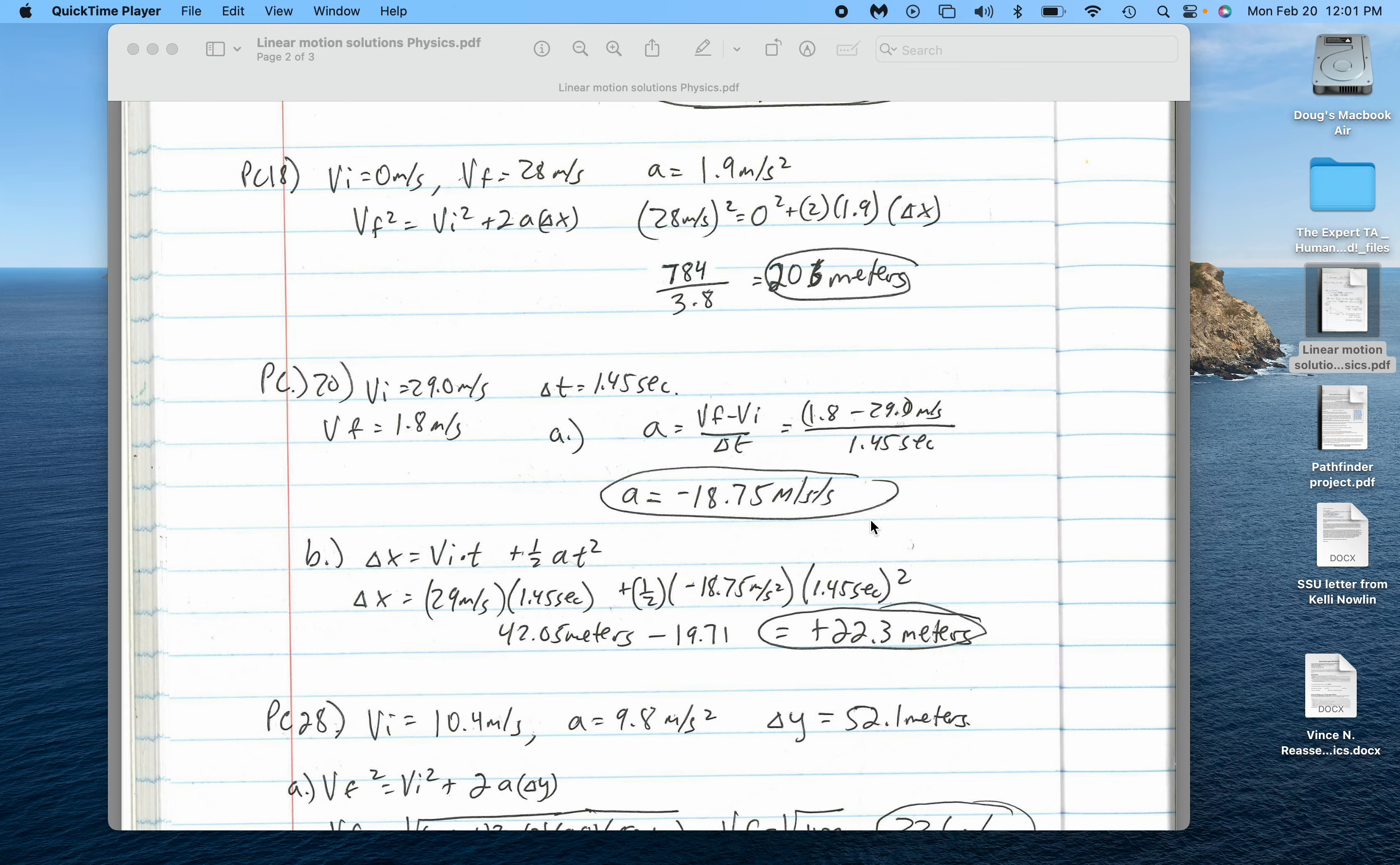For problem number 20, it says Susie Latovski, or depending on how you pronounce it, Susie loves to ski, has reached the end of the ski slope and abruptly slows down from 29 meters per second to 1.8 meters per second in 1.45 seconds. Determine her acceleration and the distance she moved during that braking period.